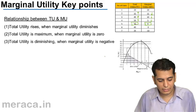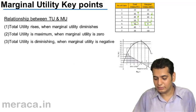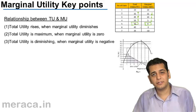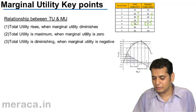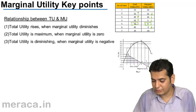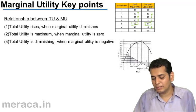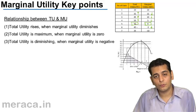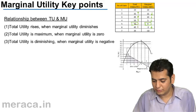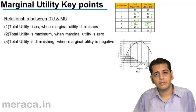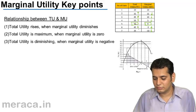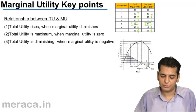After that, total utility starts to diminish when marginal utility is negative. The marginal utility is negative and the total utility starts to diminish. Marginal utility is again negative at the seventh unit, and then total utility will again diminish.